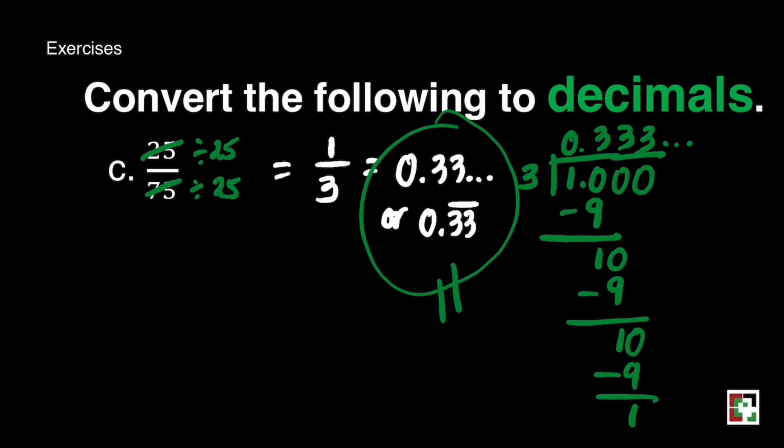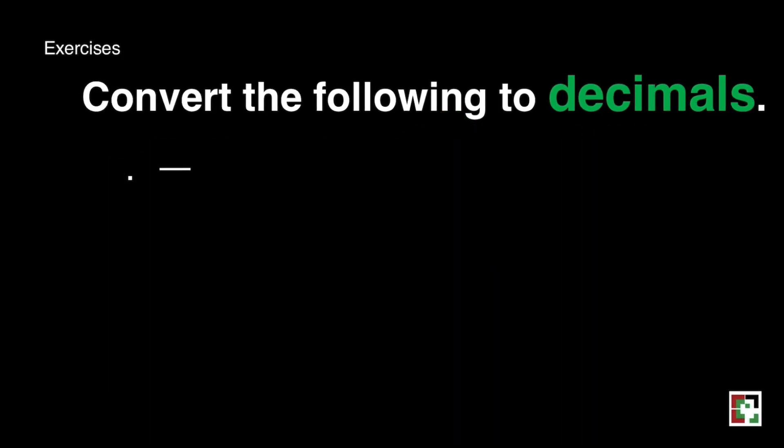you will be writing 0.33 with 3 dots or 0.33 with bar at the top telling us it has no end. And we call this decimal as non-terminating decimals. We will be learning that soon when we have another video.